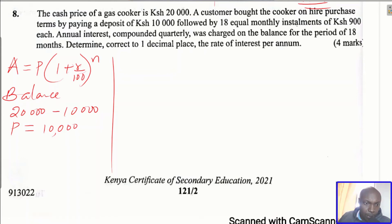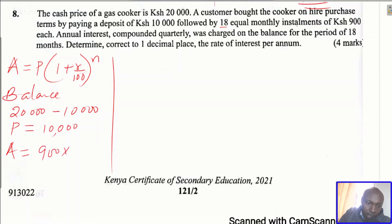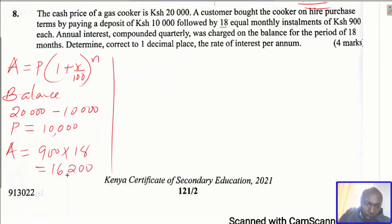After identifying the principal, we need to identify the amount paid. The balance was repaid by 18 equal monthly installments of 900 shillings each. So for 18 months, each month paying 900 shillings, the total amount to be repaid will be 900 times 18 months. When we multiply this, we get 16,200 shillings. So this would be the amount.